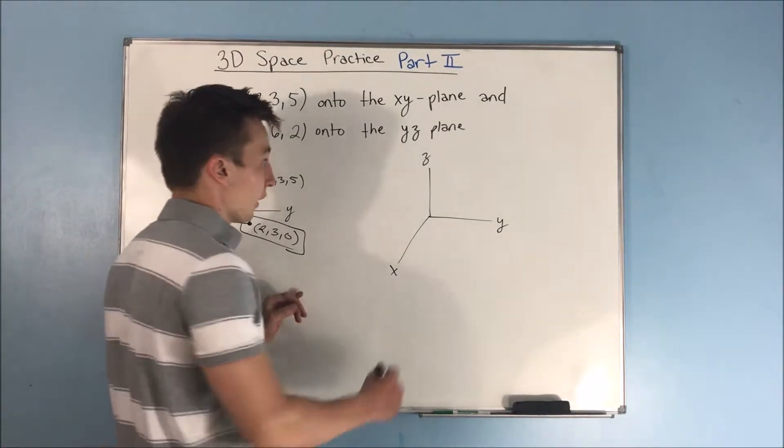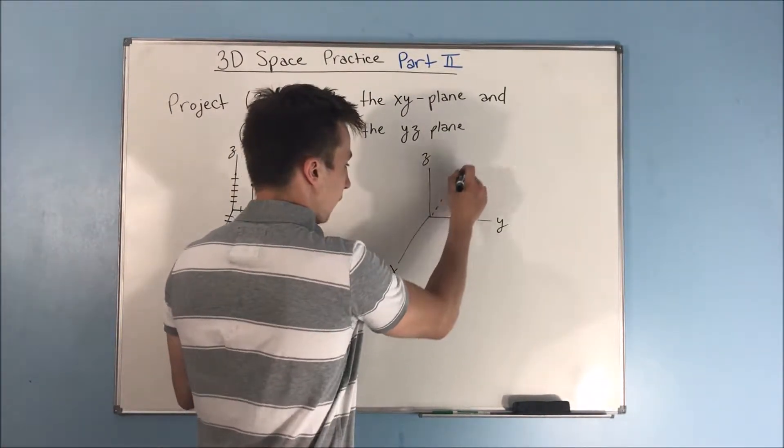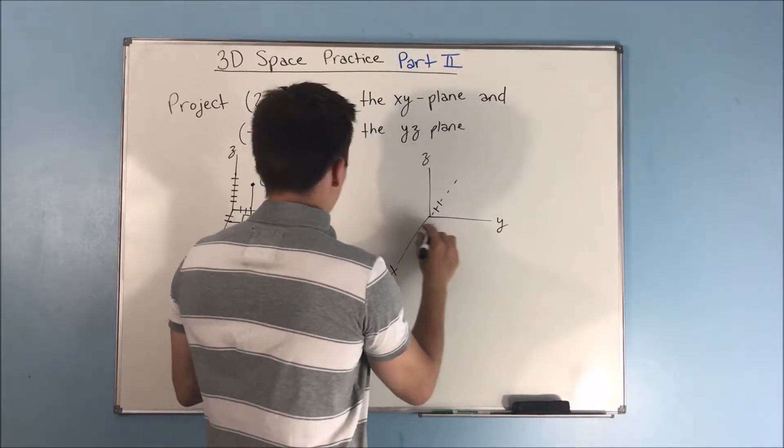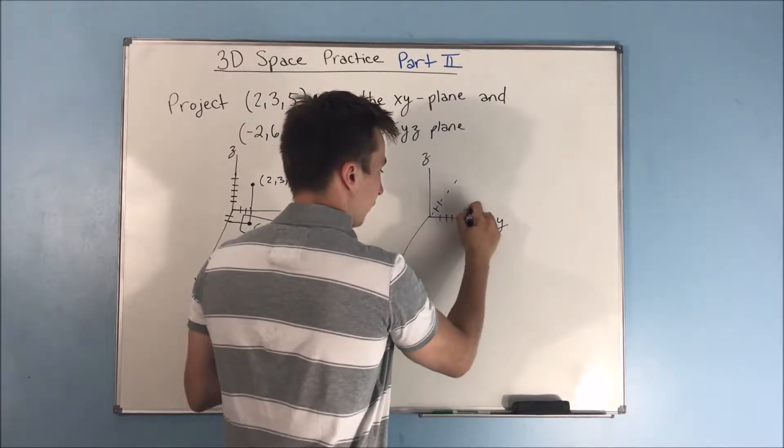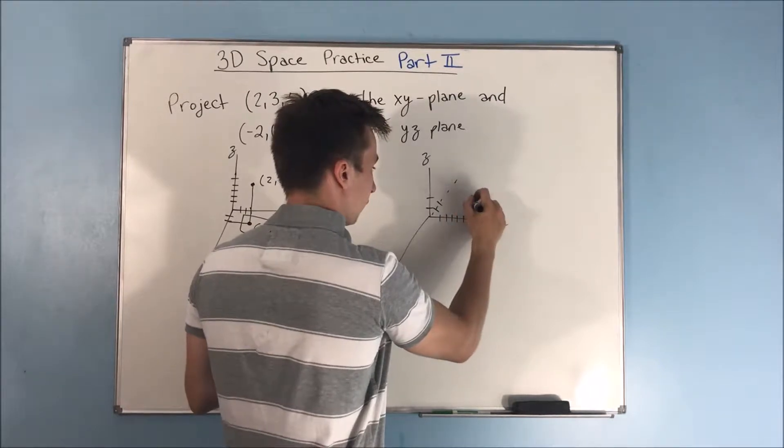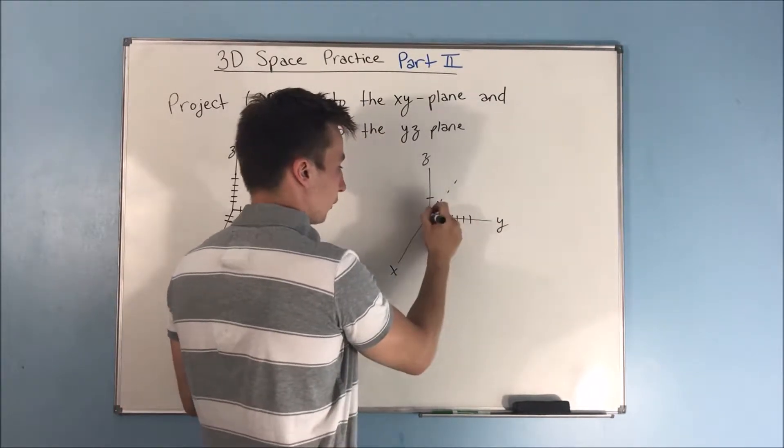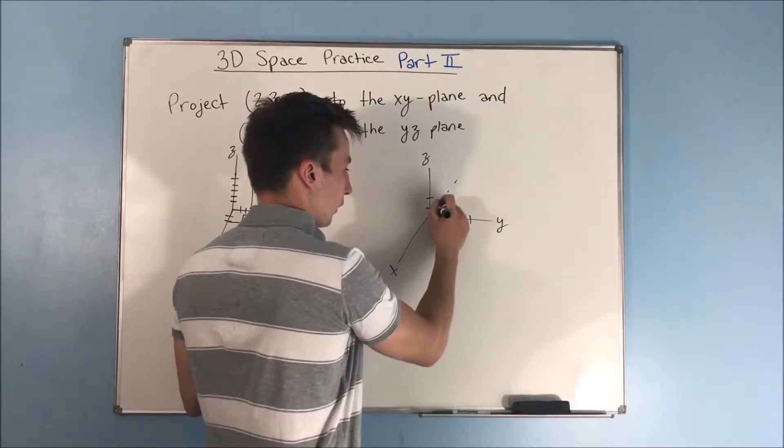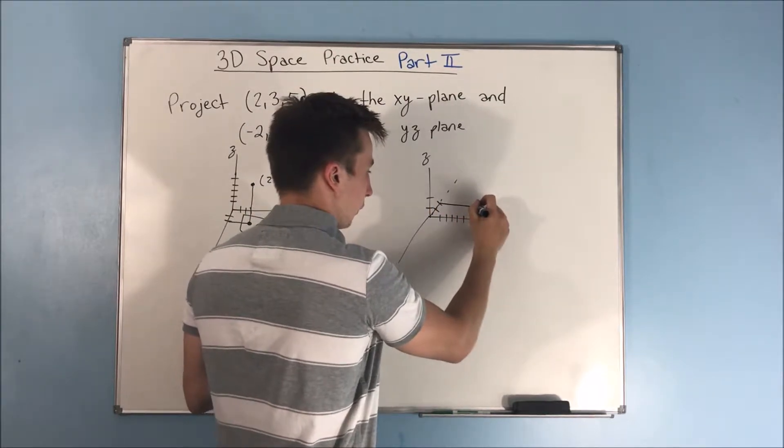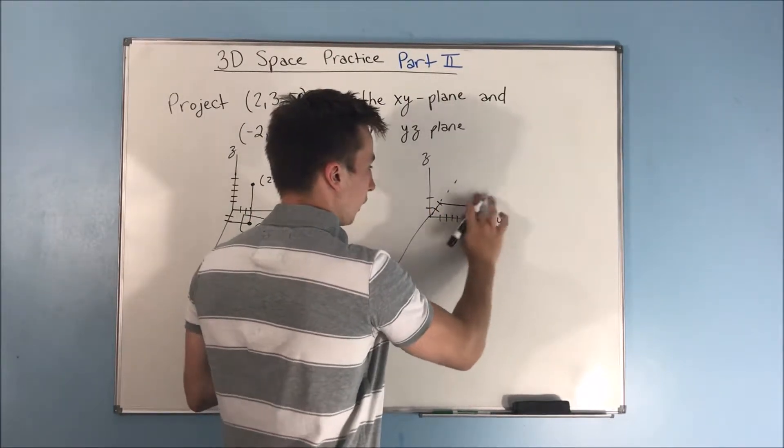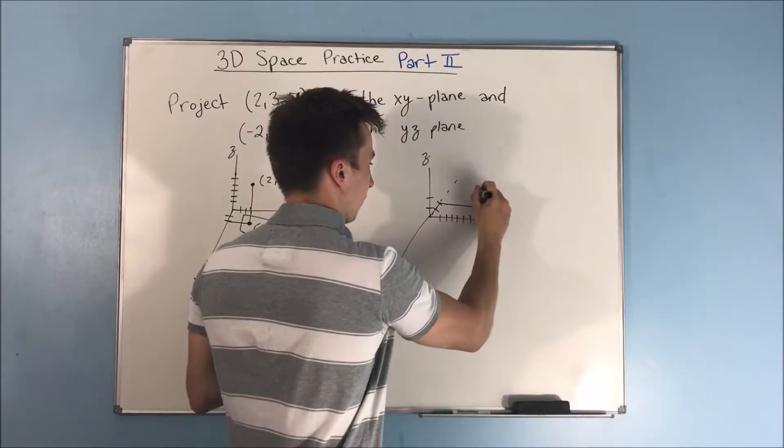So let's see what this looks like. We have a negative 2, it's going to be going in the negative X direction, 1, 2. In the Y, 1, 2, 3, 4, 5, 6. And 2 in the Z, 1, 2. So we should get a point, actually, I'll draw it. Go over 2, over and up. Oh, there we go, that looks better.